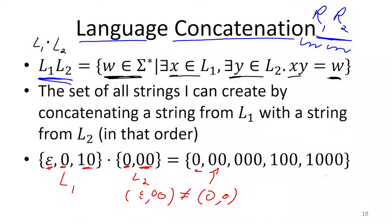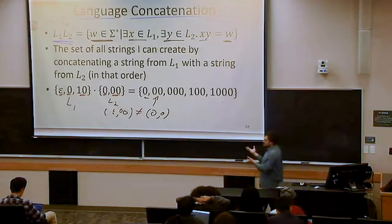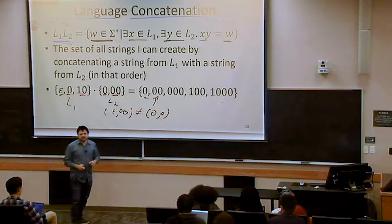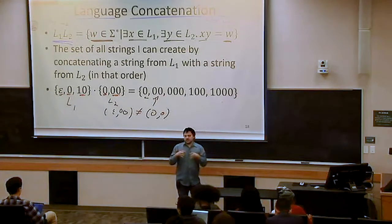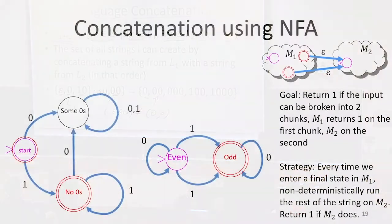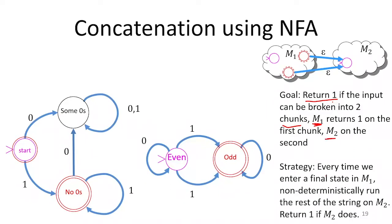So what we'd like to do is figure out: if we have two languages with finite state automata, can we build a new finite state automaton for the concatenation of those two languages? We can do this using non-deterministic finite state automata. Our goal is for the automaton to return one if the input string can be broken into two chunks — the first chunk M1 should return one on, and the second chunk M2 should return one on.